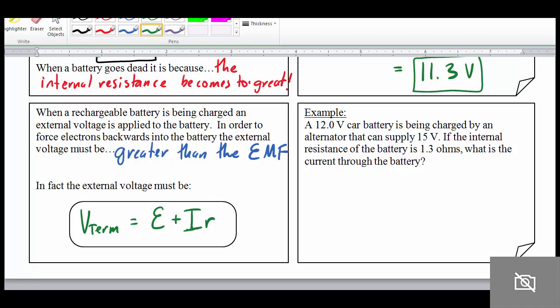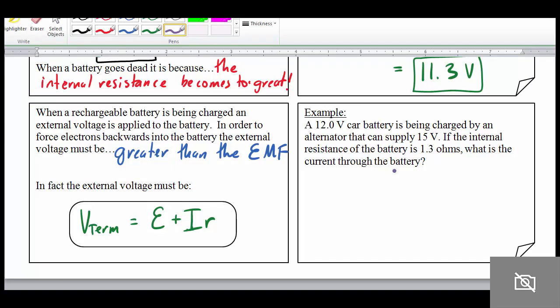Okay, again, just go ahead and hit pause and try this example. So we're charging a car battery, and it's being charged by an alternator that can supply 15 volts of external voltage. The internal resistance of the battery is 1.3 ohms. What is the current through that battery? Okay, so our formula is terminal voltage equals EMF plus I times R. Solving for I, we get I equals terminal voltage minus the EMF divided by the internal resistance. So 15 volts minus 12 divided by 1.3 ohms. And this works out to be somewhere around 2.3 amps.